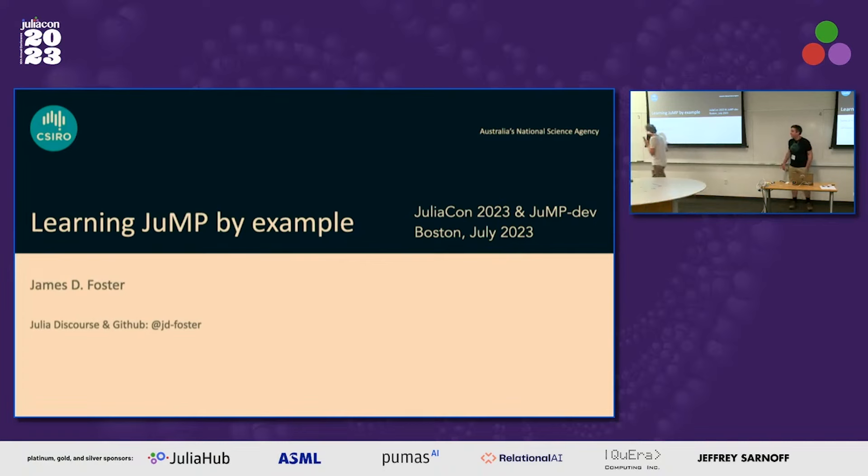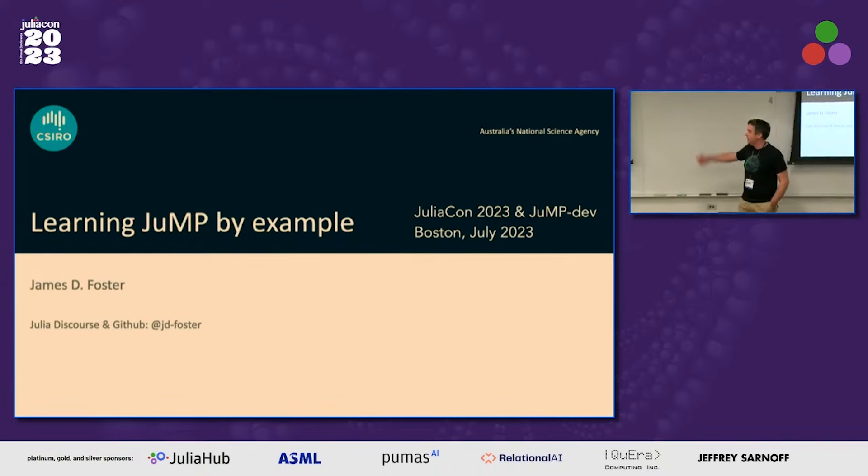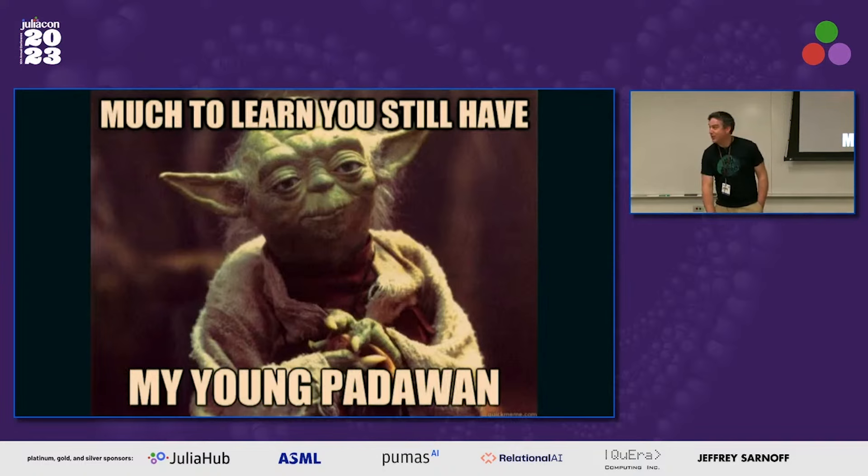Thanks for the introduction, Oscar. My fellow antipodian. I'm privileged to be here. I'm James Foster. I work for the Australian CSIRO, which is Australia's National Science Agency. But I'm here just talking about JuMP and not about my energy system modeling work. You don't have much to learn about JuMP, so I'm glad you're here.